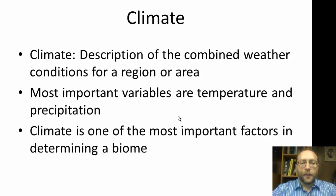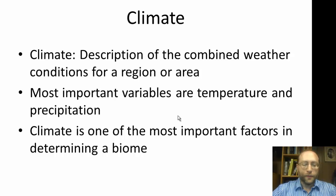The most important variables in climate are temperature and precipitation. Precipitation refers to different forms of water coming from the sky down to the ground or to the water — things like rain, sleet, snow, and hail.